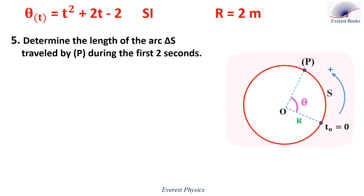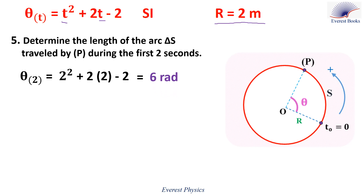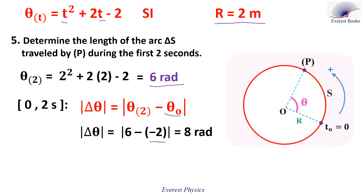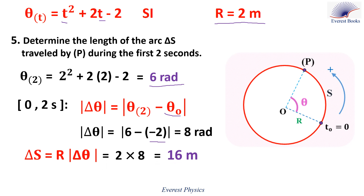Part five: determine the length of the arc Δs traveled by P during the first two seconds. Δs = R · |Δθ|, with R = 2 meters. To find |Δθ|, calculate θ(2) by replacing t by 2 in the expression of θ: θ(2) = 6 radians. Then |Δθ| = |θ(2) − θ(0)| = |6 − (−2)| = 8 radians. So Δs = 2 × 8 = 16 meters.